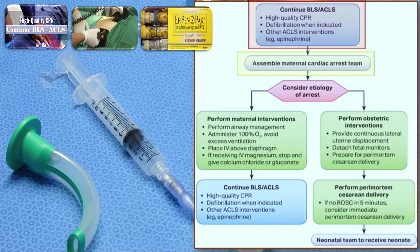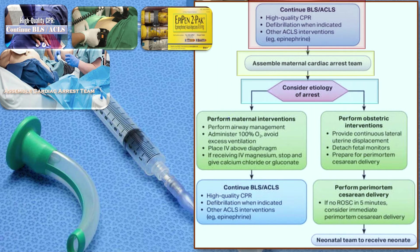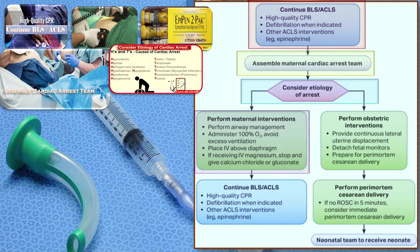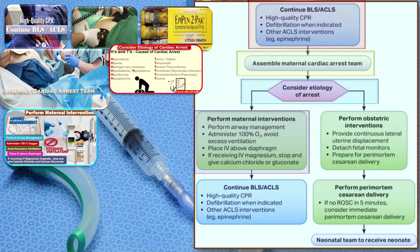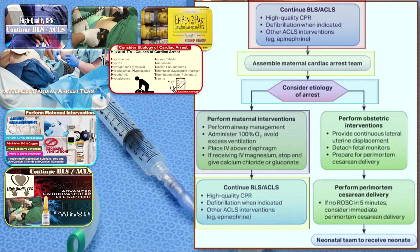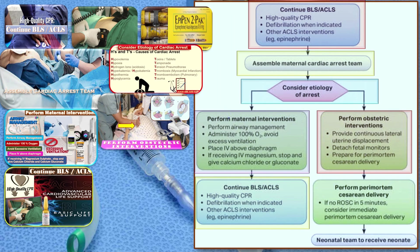Perform maternal interventions: manage the airway, administer 100% oxygen, and avoid excessive ventilation. Place IV access above the diaphragm. If the patient is receiving IV magnesium, stop it and give calcium gluconate or calcium chloride. Continue BLS, ACLS, high-quality CPR, and defibrillation when indicated. Perform offsetting interventions and provide continuous lateral uterine displacement.